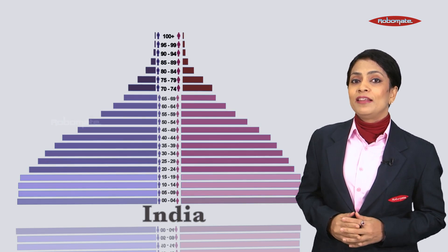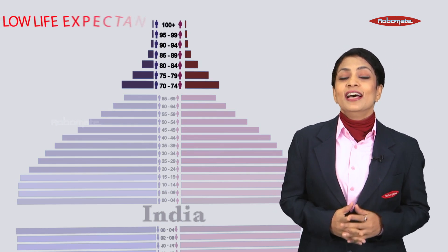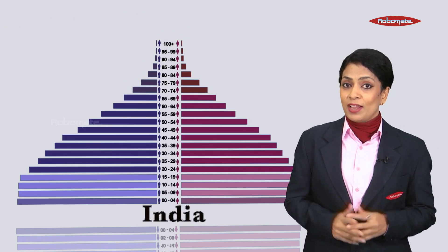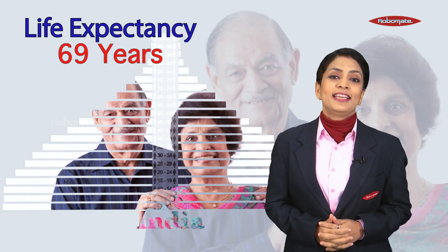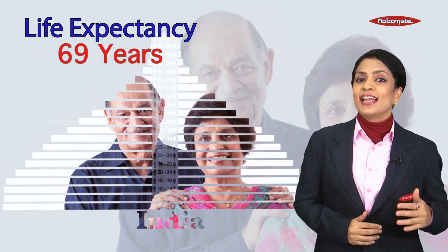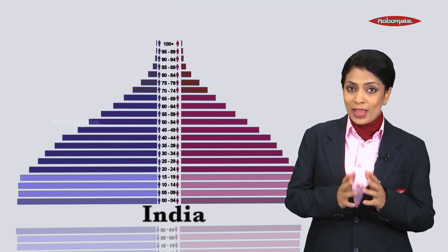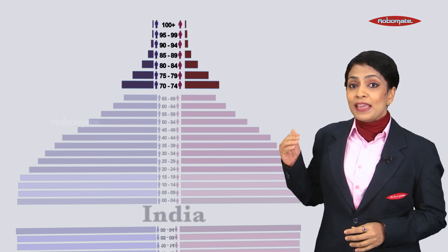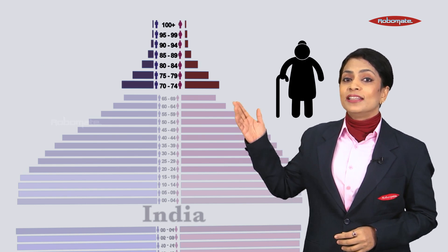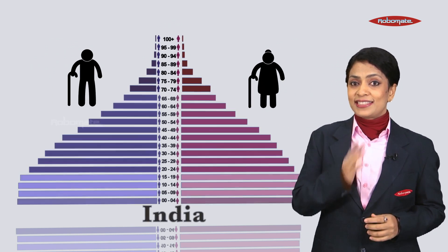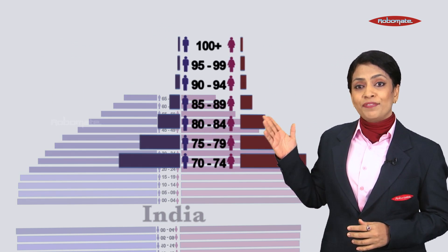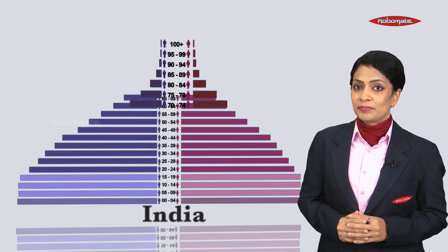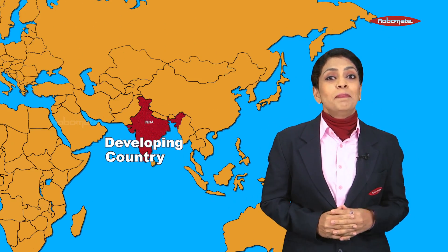The population pyramid gradually narrows towards the top; fewer people are living in the older age group, signifying low life expectancy for the senior population. The average life expectancy in India is 69 years. Among the older population, females are living longer than males — an asymmetrical feature seen in the older age group. India is a developing country.